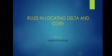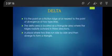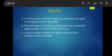The delta and core are important in fingerprint analysis. Before ridge tracing and ridge counting, the fingerprint expert or examiner first locates the delta and the core. A delta is the point on a friction ridge at or nearest the point of divergence of two type lines. The delta area is located as a triangular area where the ridges radiate outward in three directions, or a place where two lines run side by side and then diverge to form a triangle.